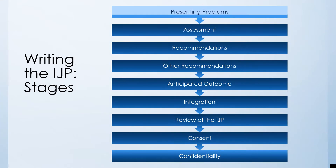When writing an IJP, there are various stages throughout the process. These include understanding the presenting problem, conducting an assessment, identifying and building recommendations, establishment of an anticipated outcome, identifying how it can be integrated with other support or treatment plans, a process for review, ensuring that consent is obtained by the individual and/or legal decision-makers, and a review of the confidentiality of these private records.